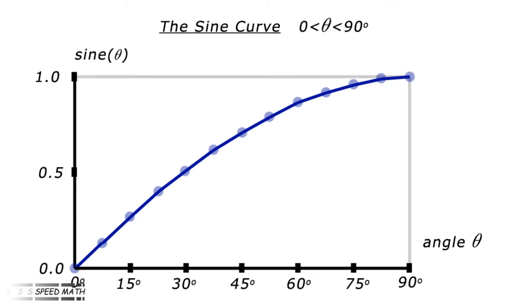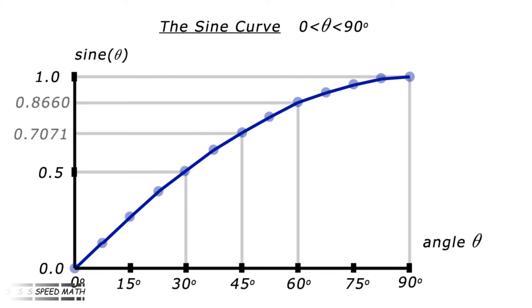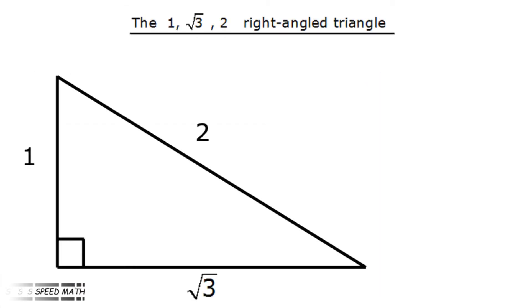Now there are three angles that have important sine values: 30 degrees, 45 degrees, and 60 degrees. These numbers don't look particularly easy to remember, but there is a way to actually work them out. Let's look at the 30 degree and 60 degree angles first. These angles reside in a special right angle triangle of sides 1, root 3, and 2.